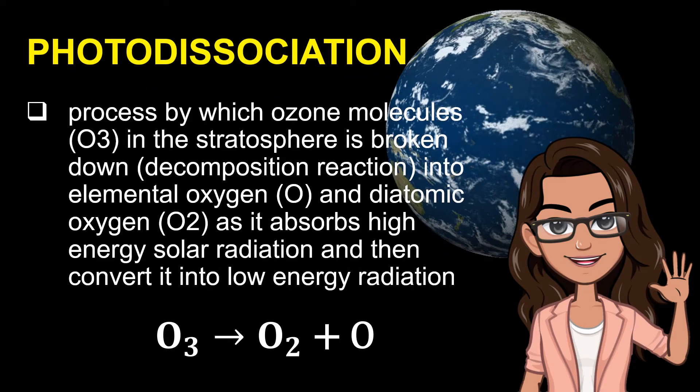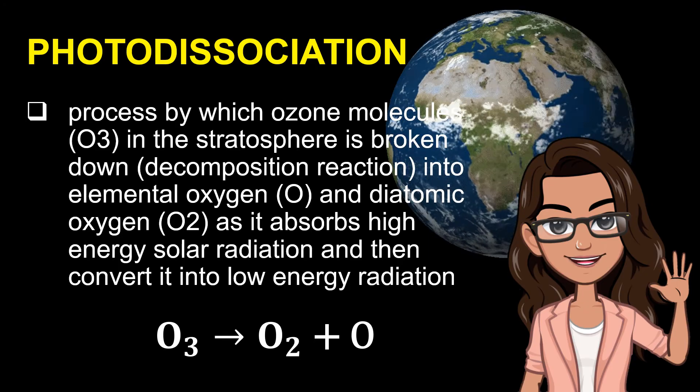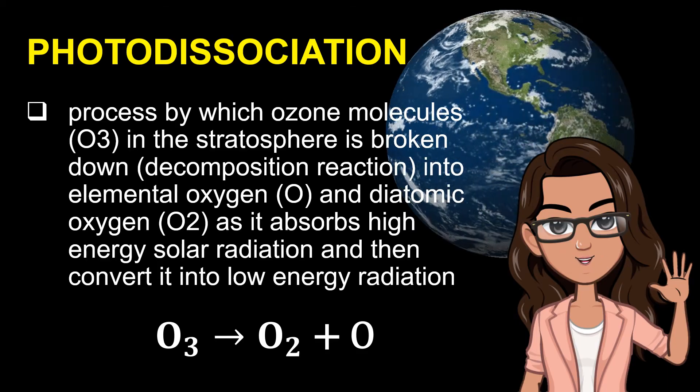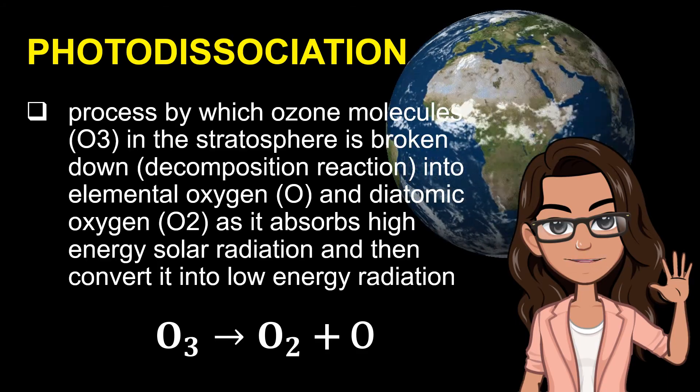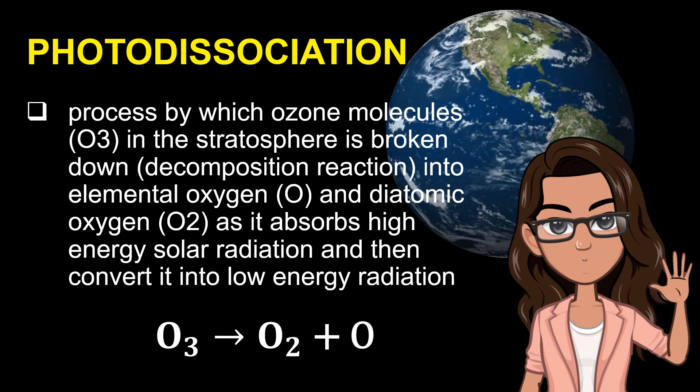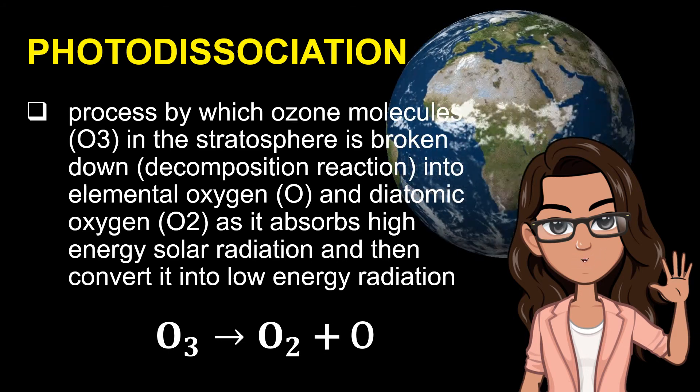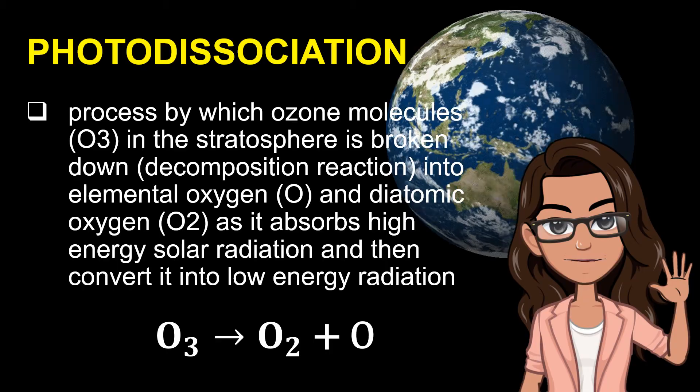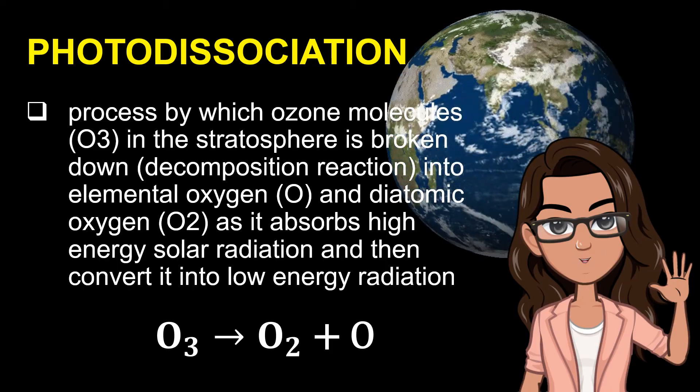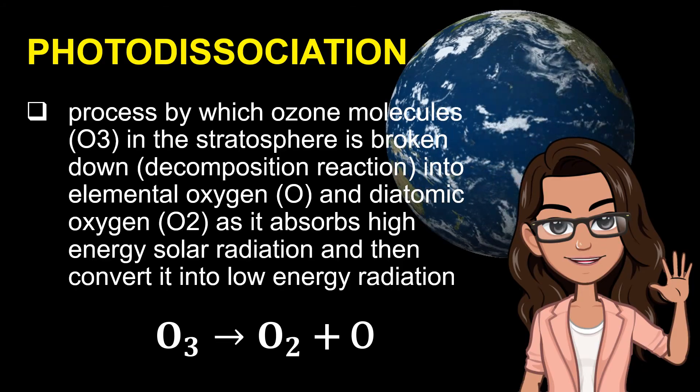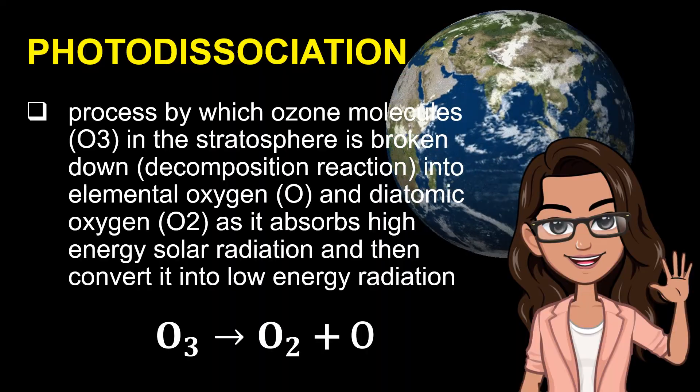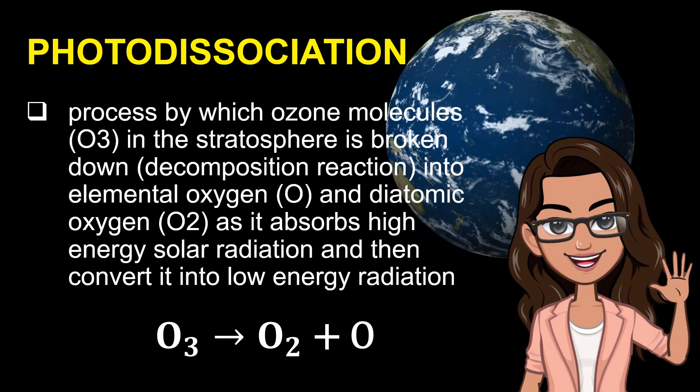Photodissociation is the process by which ozone molecules, or O3, in the stratosphere is broken down through decomposition reaction into elemental oxygen, or O, and diatomic oxygen, or O2, as it absorbs high-energy solar radiation and then converts it into low-energy radiation. This way, harmful high-energy radiation will not go directly into the Earth's surface.